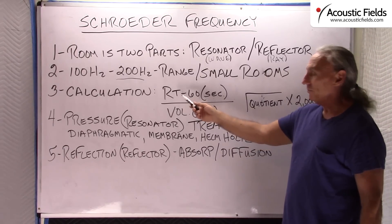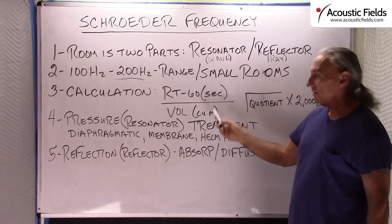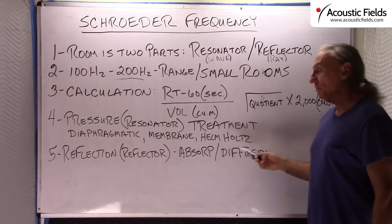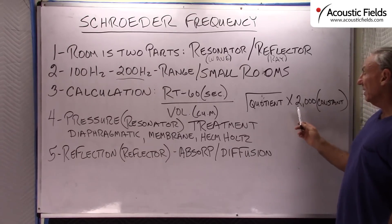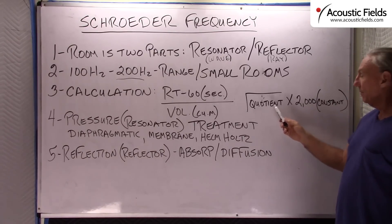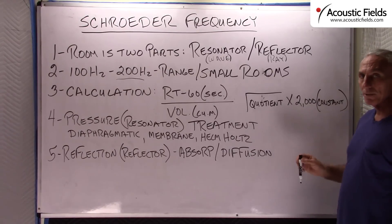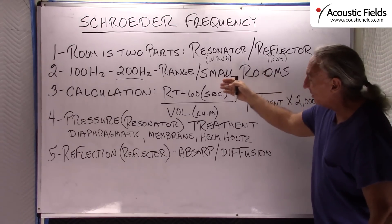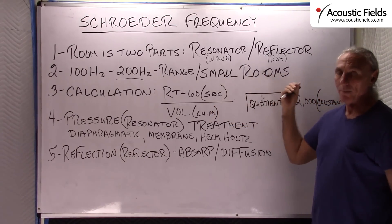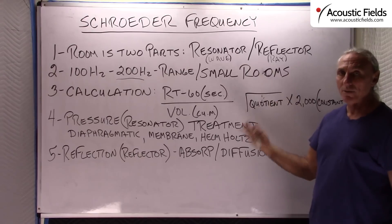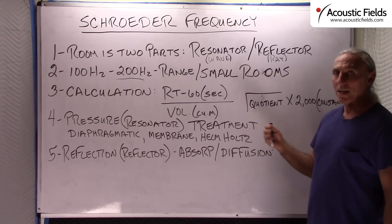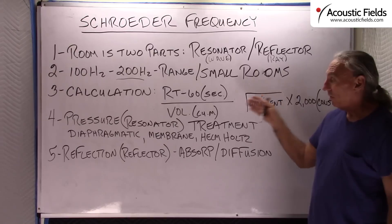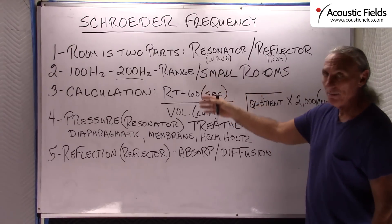How do we calculate it? It's the reverberation time in seconds divided by the volume of the room in meters. The quotient is then square rooted times 2,000, which is a constant. So it's reverberation time and volume. Remember I'm always talking about volume — today's small rooms don't have any volume, so that's always a problem because it has an impact on everything.